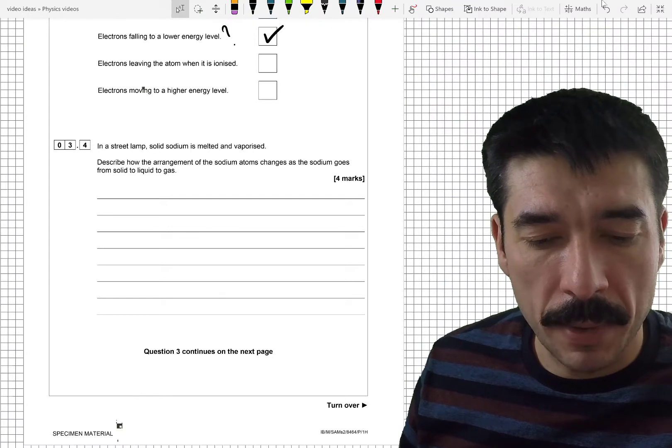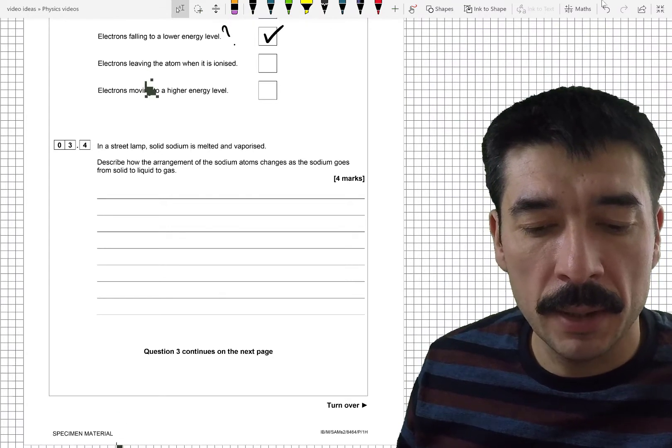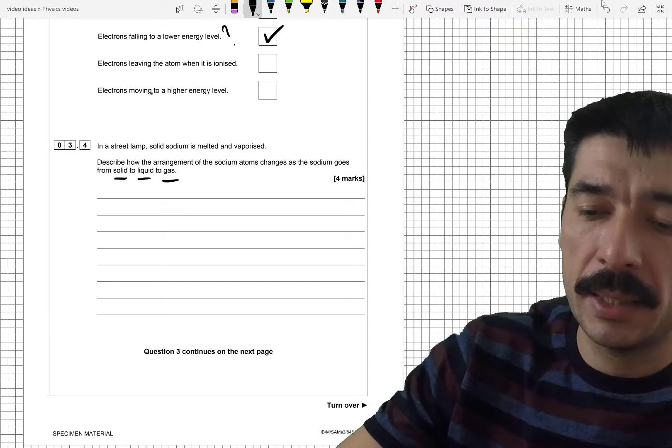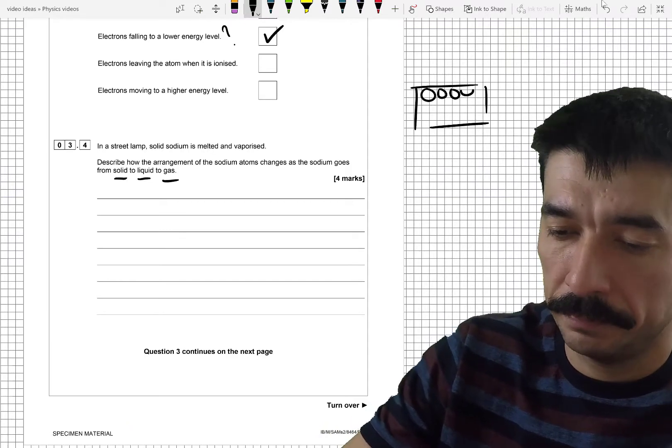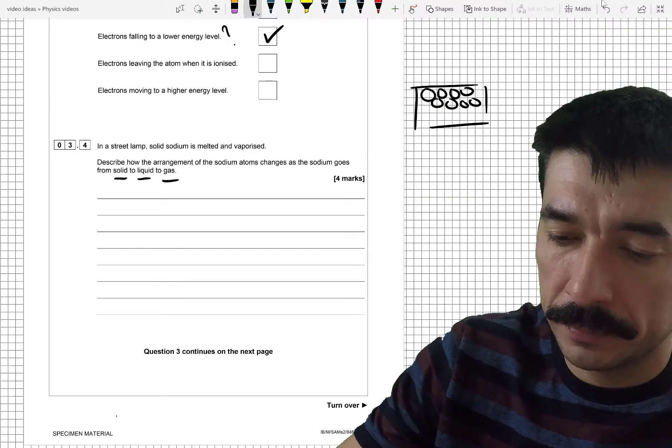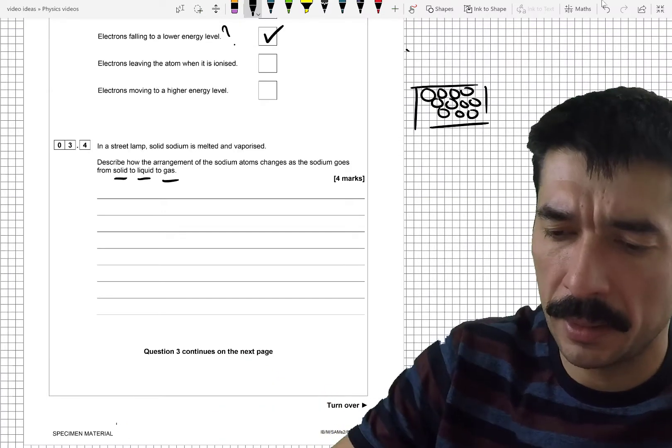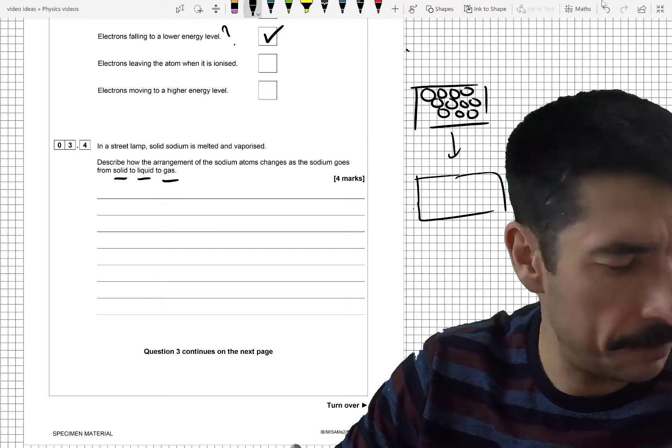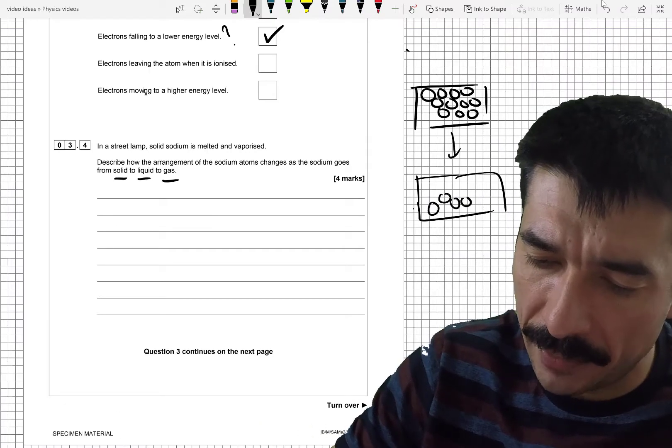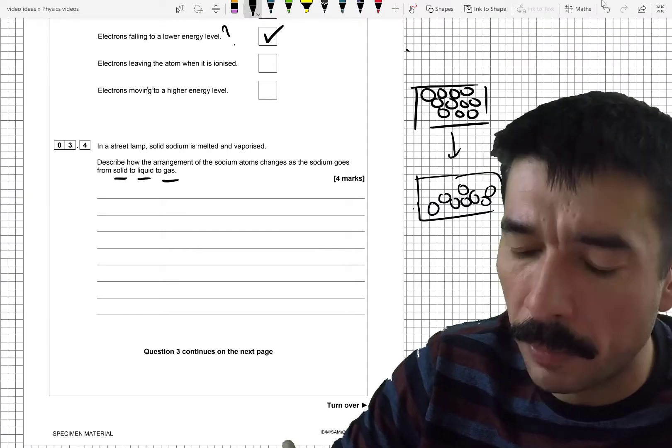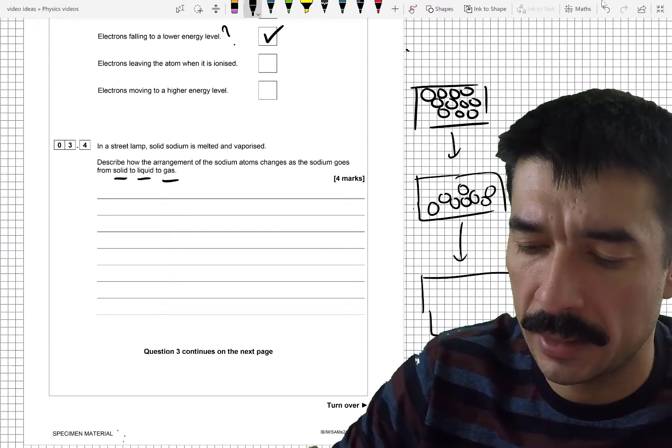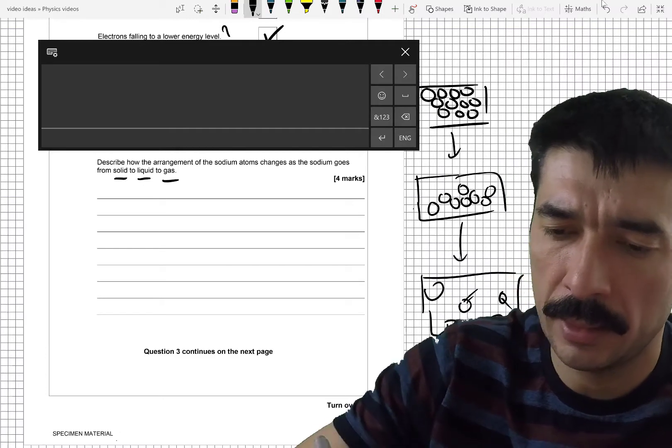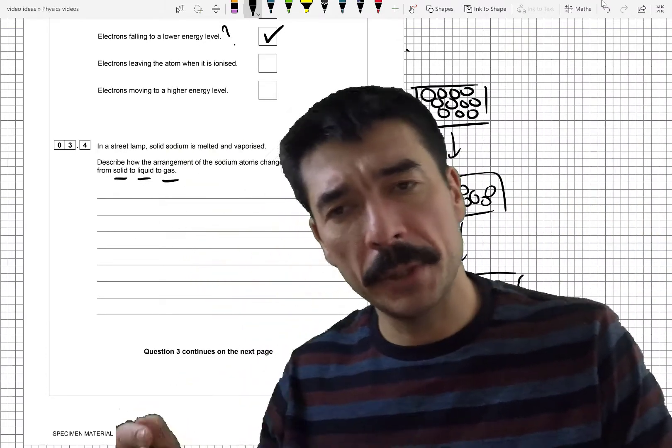In a street lamp, solid sodium is melted and vaporised. Describe how the arrangement of sodium atoms changes as sodium goes from solid to liquid to gas. Right. So this is basic key stage three stuff. In a solid, atoms are packed closely together. When you become a liquid, when the thing becomes a liquid, the atoms are still close together. No regular arrangement. And they can swap places. And finally, in a gas, they are moving around freely, randomly. Okay. So, those are the points you need to make.